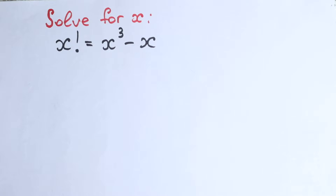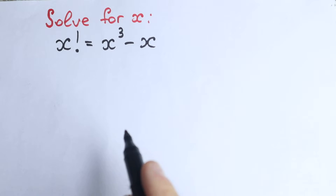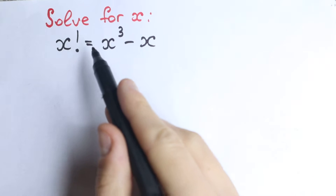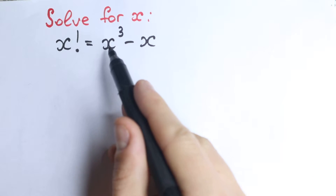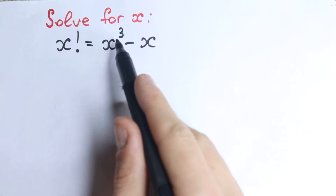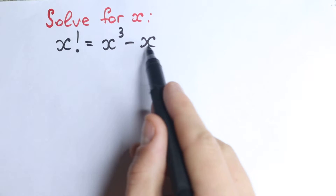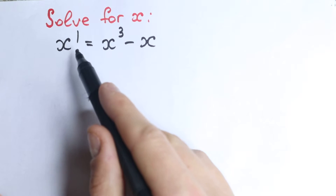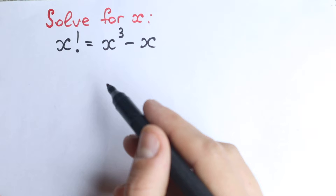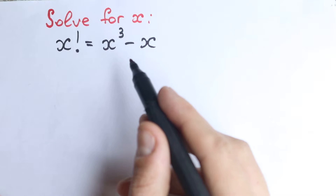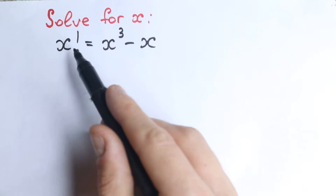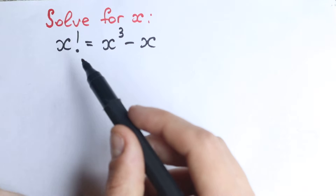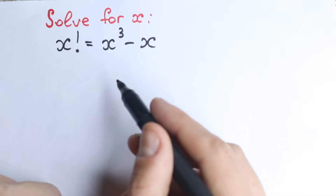Hello everyone, welcome back to Higher Mathematics. Really interesting question — this is an Olympiad question with a really interesting moment involving factorials. We have x factorial equal to x cubed minus x. We have a cube, a difference, and factorials, which is really great. I like this factorials question, and I hope a lot of students like it as well, because factorials are a really interesting part of mathematics. So let's try to solve it.